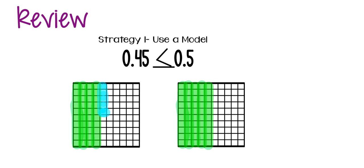We also have to review how we compare decimals. We learned three strategies. Our first strategy was using a model. In this problem we compared forty-five hundredths to five tenths. We colored in forty-five hundredths — that's four full tenths and five hundredths. On the right side we have five tenths. We can see that forty-five hundredths has less shaded in than five tenths, so forty-five hundredths is less than five tenths.